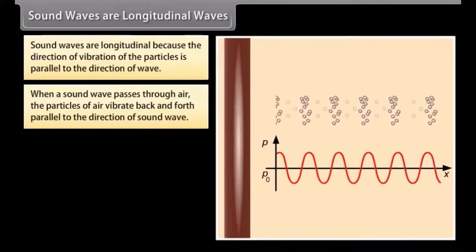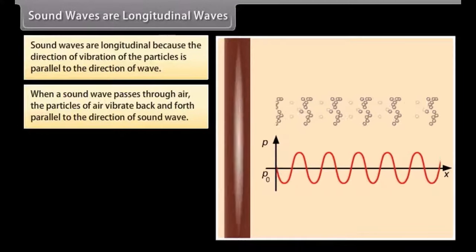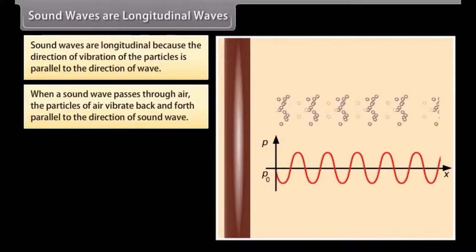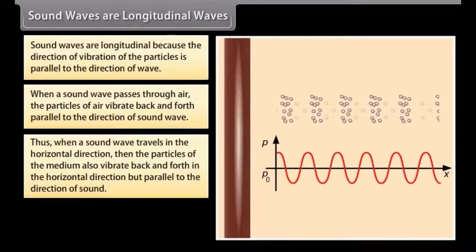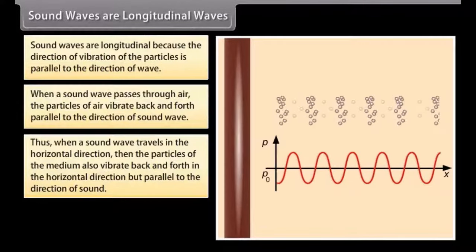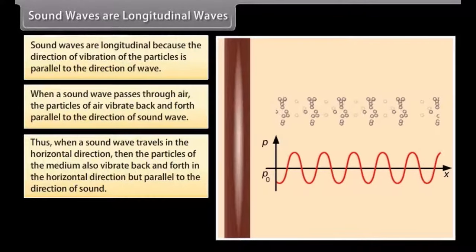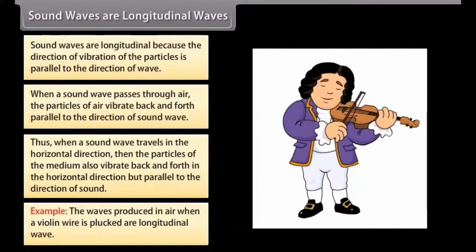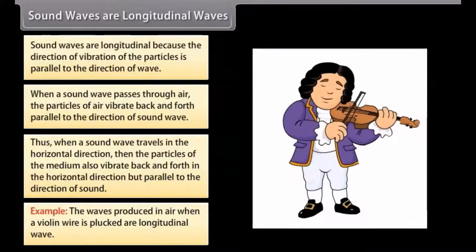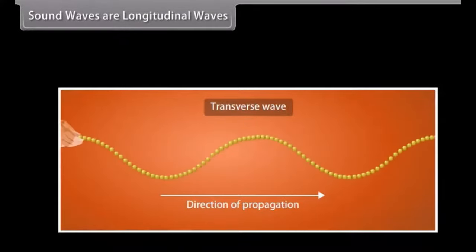Sound waves are longitudinal because the direction of vibration of the particles is parallel to the direction of wave. When a sound wave passes through air, the particles of air vibrate back and forth parallel to the direction of sound wave. Thus, when a sound wave travels in the horizontal direction, then the particles of the medium also vibrate back and forth in the horizontal direction but parallel to the direction of sound. For example, the waves produced in air when a violent wire is plugged are longitudinal waves.